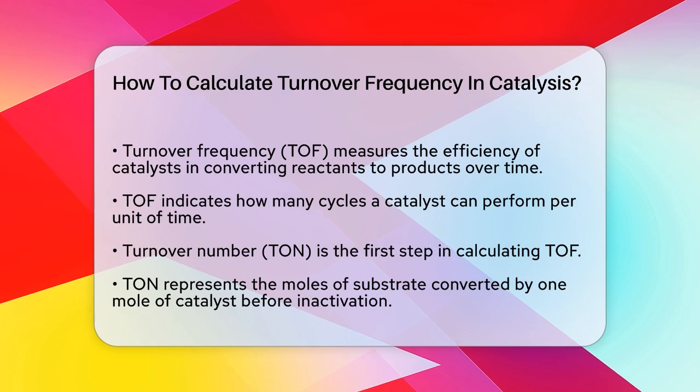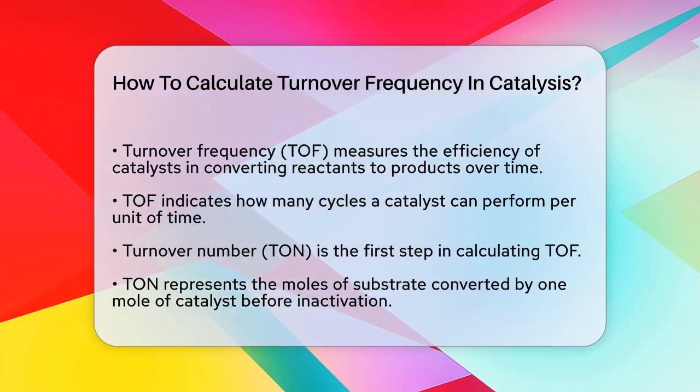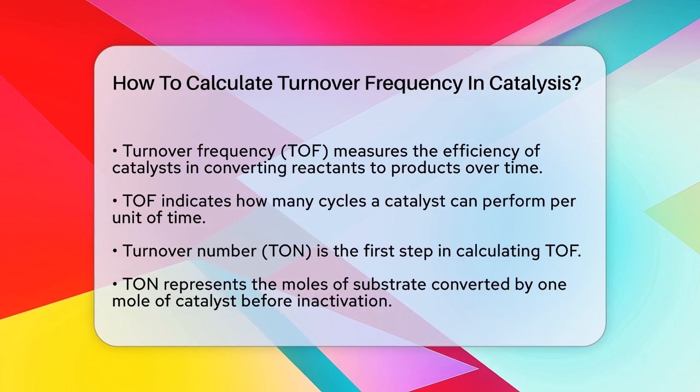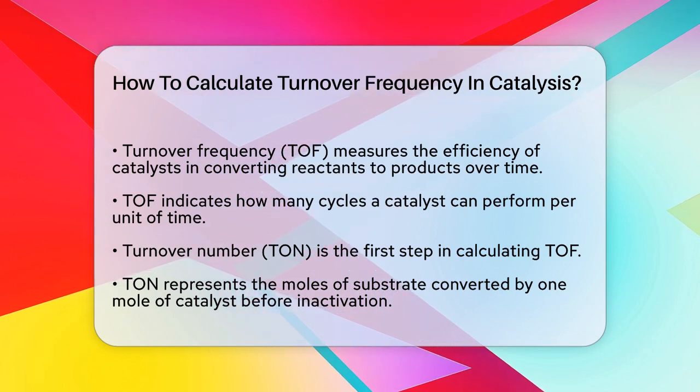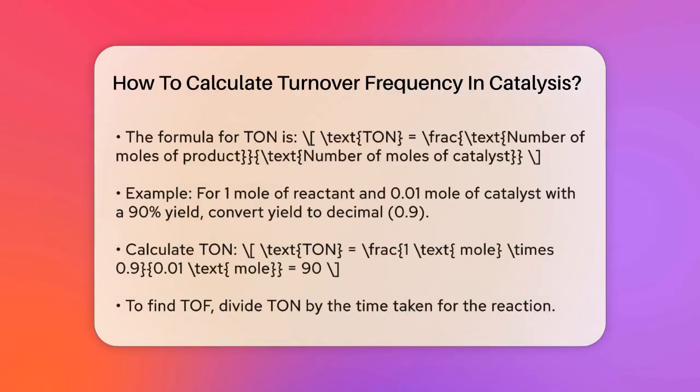To calculate the turnover frequency, you need to start with the turnover number, often abbreviated as TON. The TON is the number of moles of substrate that a mole of catalyst can convert before it becomes inactivated.